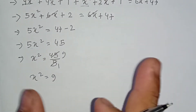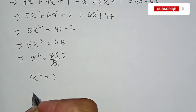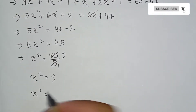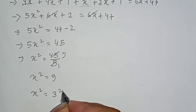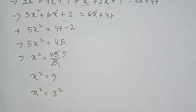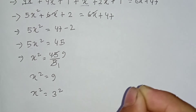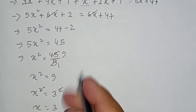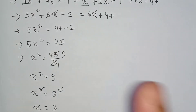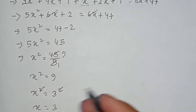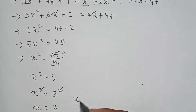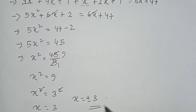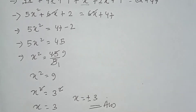Now I'm gonna have x squared equals 3 squared — because three times three is nine. So three squared is nine, like 3 times 3 is 9 — x squared equals 3 squared. So x equals plus or minus 3. The answer is x equals plus or minus 3.